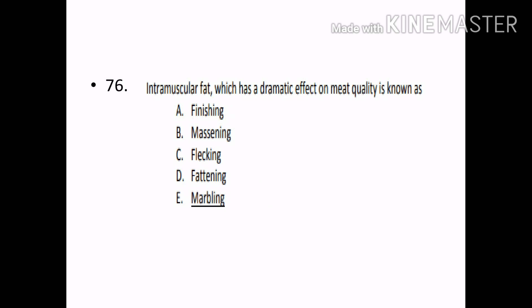Intramuscular fat which has a dramatic effect on meat quality is known as: Options — Finishing, Mezzening, Flecking, Fattening, Marbling. Correct answer: Option E — Marbling.